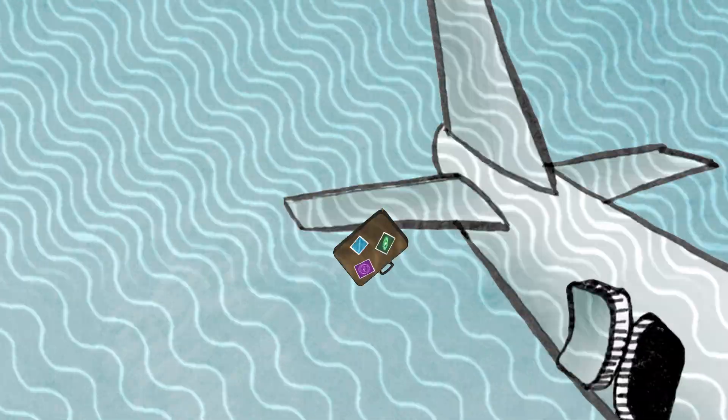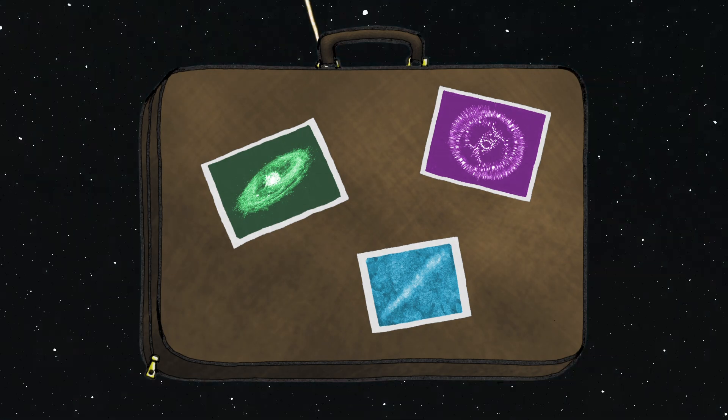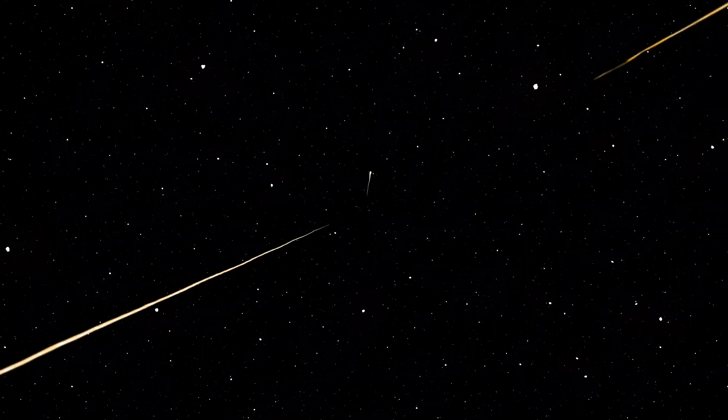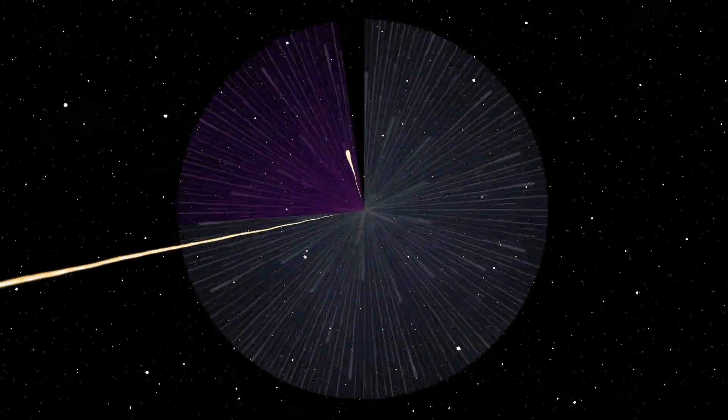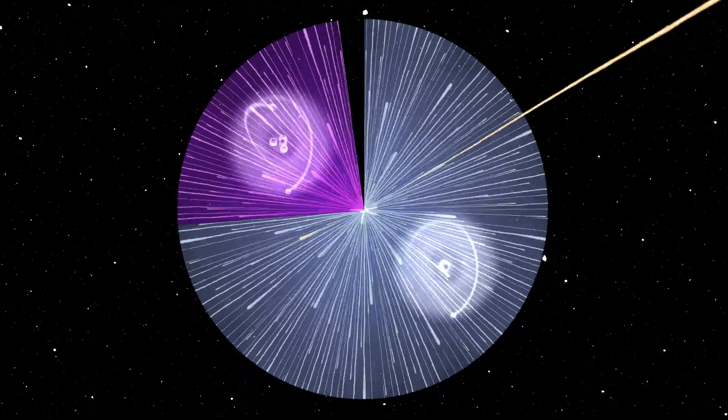What makes cosmic rays useful as messengers is that they carry the traces of their origins. By studying the frequency with which different particles occur, scientists are able to determine the relative abundance of elements, such as hydrogen and helium, within the universe.